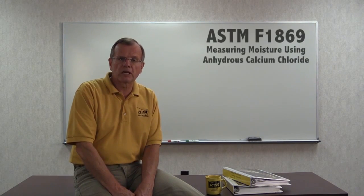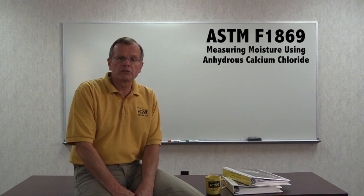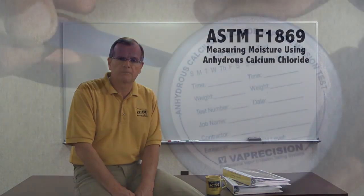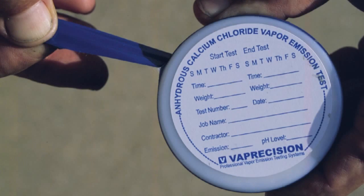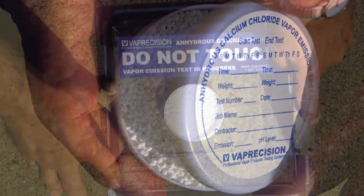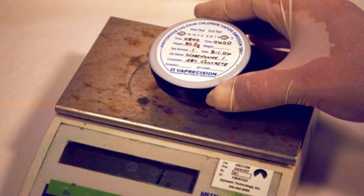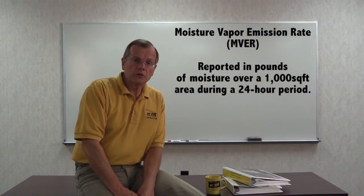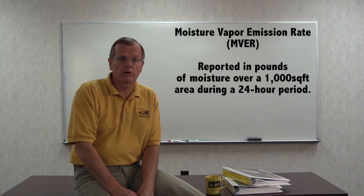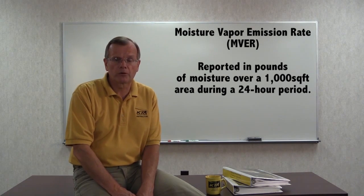This method is addressed in ASTM F1869. This is a non-destructive test that requires exposing the concrete slab to anhydrous calcium chloride for a given length of time. The anhydrous calcium chloride is stored in a plastic container and is weighed to the nearest tenth of a gram before you expose it to the surface environment, and again after exposure, to determine the increase in weight. The values are entered into a formula, and the results are expressed as Moisture Vapor Emission Rate, or MVER, reported in pounds of moisture over 1,000 square foot area during a 24-hour period.